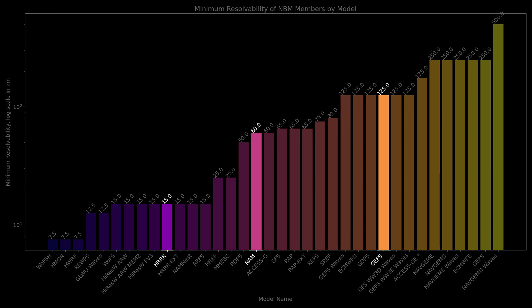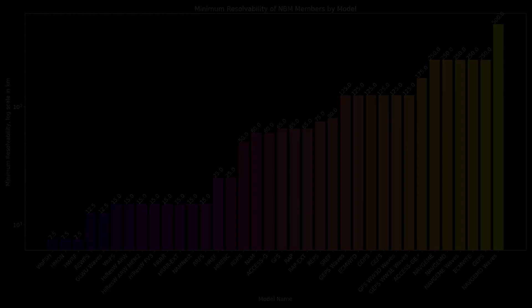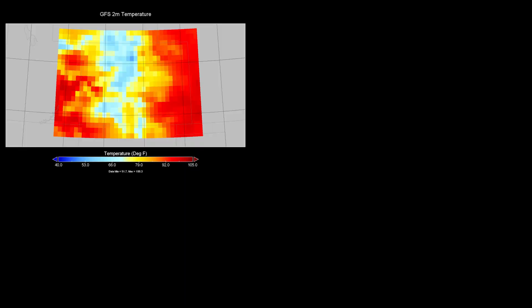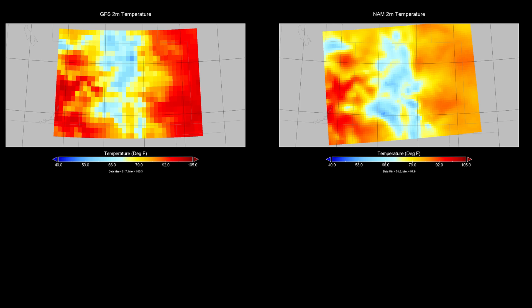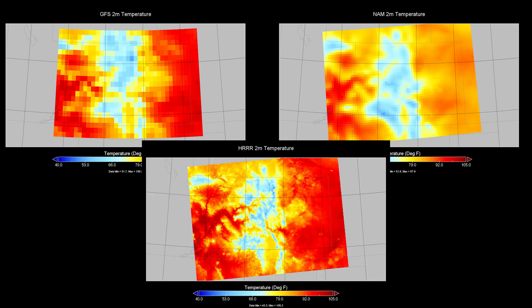Instead of downscaling global and mesoscale models onto the 2.5 km grid for the NBM, interpolation is used. If we look at a subset of the different models that go into the NBM — the GFS, the NAM, and the HRR — we can quickly see several things that stand out. The first is that the raw GFS data does not line up with the grid orientation of the NAM and the HRR.